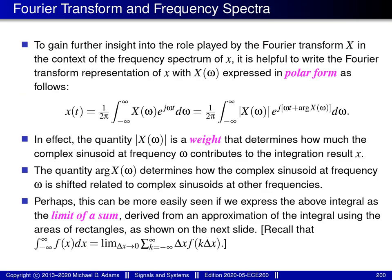I'd like to show how the Fourier transform leads to the notion of frequency spectra. For this purpose, it's helpful to write the Fourier transform representation with the Fourier transform expressed in polar form. Here on this slide, we have the Fourier transform representation of the function little x, where big X denotes the Fourier transform of little x. I'm going to rewrite big X of omega in polar form, and combine the exponential from the polar form with the exponential already in the equation.